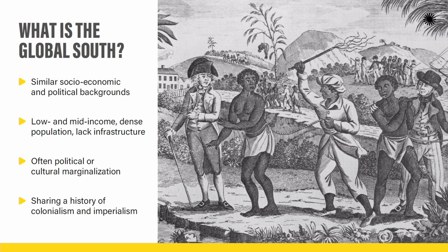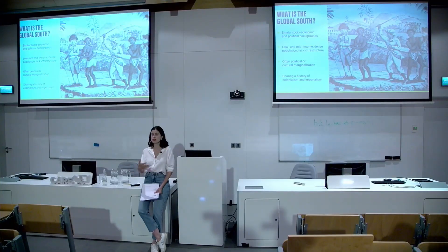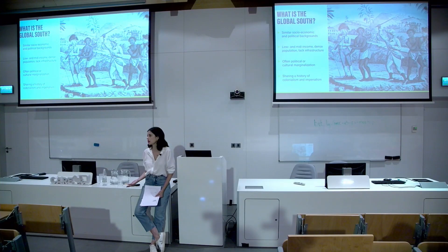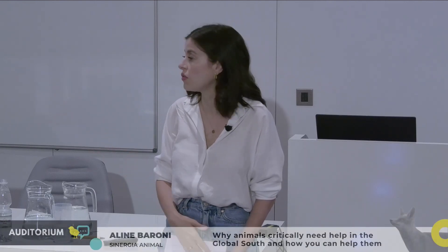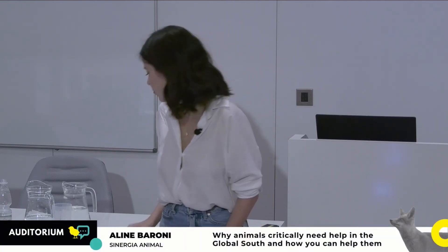So for example, we have Australia and New Zealand — they are in the southern hemisphere, but they are not considered countries of the Global South. And there are some countries, especially in Asia, that are in the northern part of the planet, but they are considered countries of the Global South.